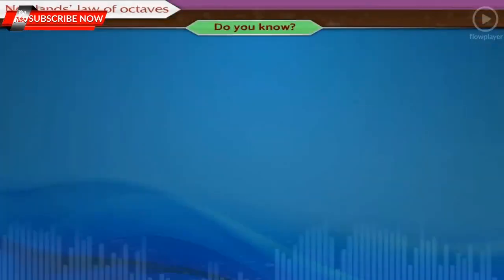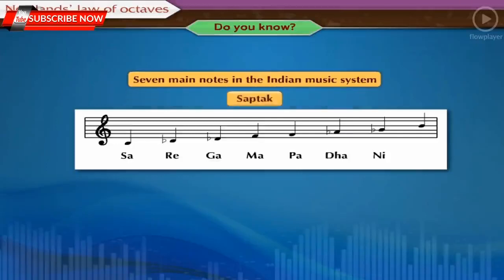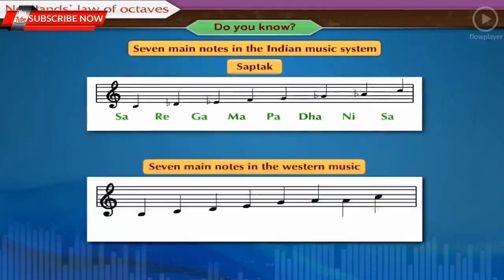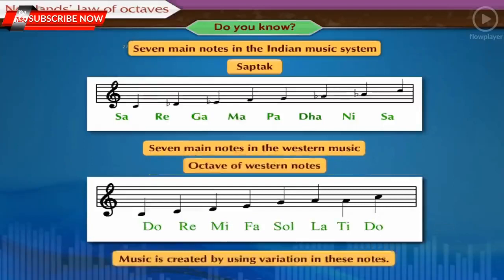In the Indian music system, there are seven main notes: Sa, Re, Ga, Ma, Pa, Dha, Ni, and their collection is called Saptak. The frequency of the notes goes on increasing from Sa to Ni. After this comes Sa of the upper Saptak, which is at double the frequency of the original Sa. This means that after the completion of one Saptak, the notes repeat. The seven notes in Western music are Do, Re, Mi, Fa, So, La, Ti. The note Do, with double frequency, comes again at the eighth place. This is the octave of Western notes, and music is created by using variation in these notes.